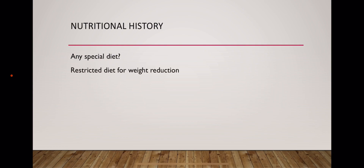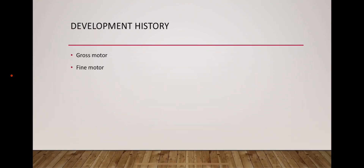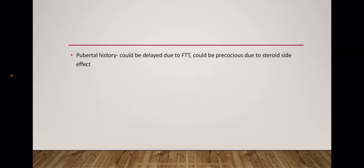Take a brief developmental history and any pubertal history — puberty could be delayed due to failure to thrive, or could be precocious, or could be a side effect of steroids. Allergy history is important for asthma.